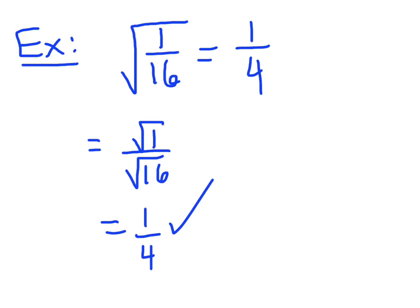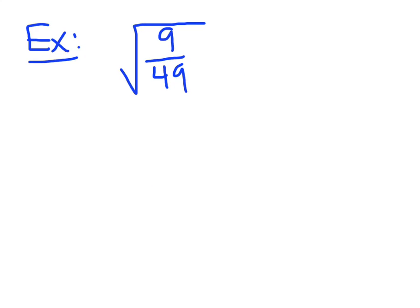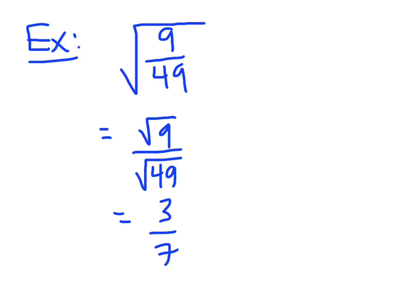Now you can make it a little more complicated by having numbers other than 1 on top. We have the square root of 9 over 49. What's the square root of 9? What's the square root of 49? That becomes 3 over 7. So the square root of 9 over 49 is 3 over 7.